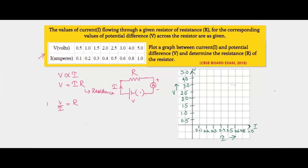In order to find out the resistance, let's first plot the data on a graph. This is a V versus I graph, also known as the V-I characteristic graph. Let's start plotting these values.